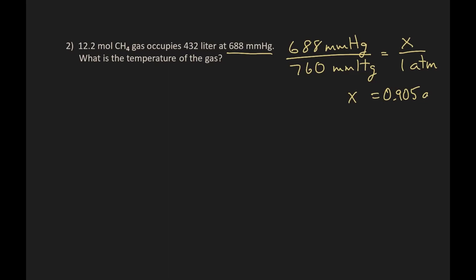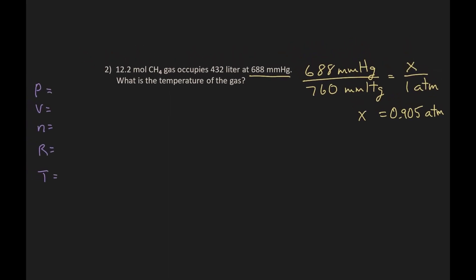That gives us x equals 0.905 atmospheres, which is equal to 688 millimeters of mercury. So our pressure we will use is 0.905 atmospheres. Volume is given in the problem. Moles is given in the problem. Now that we have atmospheres, we are going to use the R for atmospheres.